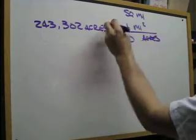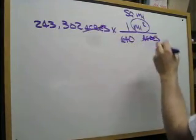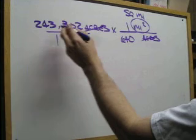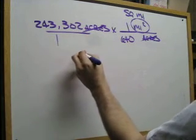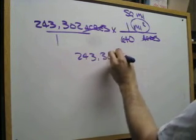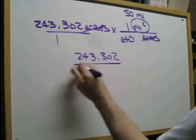Acres cancel here. So we're going to multiply 243,302 times 1, which is itself.